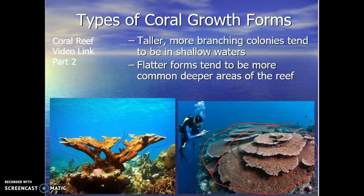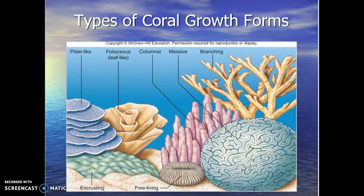We're going through the general pattern of coral growth forms. Taller branching colonies tend to be in shallow waters, while flatter forms tend to be in deeper waters. They broaden out and flatten out in an effort to access what little light reaches the depth. So when you are on a coral reef, you're going to see these different types of coral growth forms, including plate-like growth forms happening in various areas of the reef.